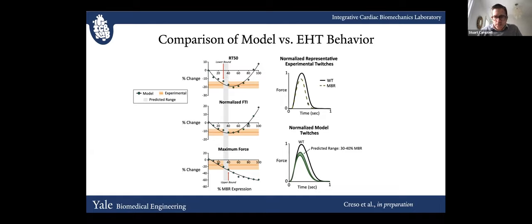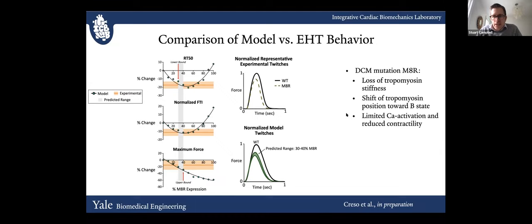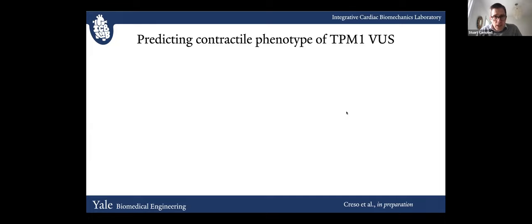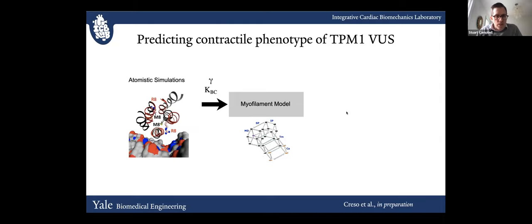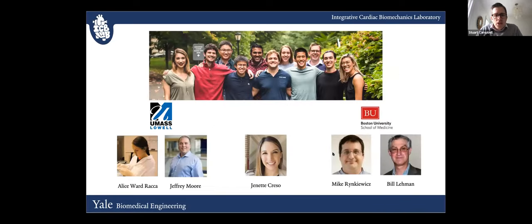In summary, this DCM mutation M8R can be explained by a loss of tropomyosin stiffness and a shift towards the blocked state of tropomyosin, resulting in limited contractility in response to calcium transients. These are ultimately the fundamental drivers of disease. I hope I've given you an idea of how we're using this myofilament model to harvest information from atomistic simulations and begin making reasonable predictions about phenotype. Thank you to my collaborators, my graduate student Jeanette Caruso, and the rest of my lab.